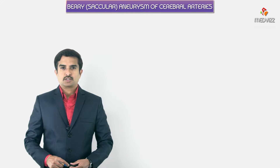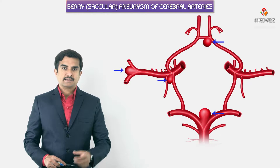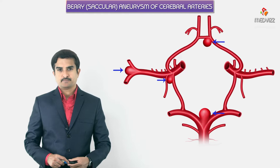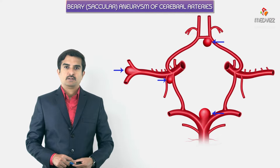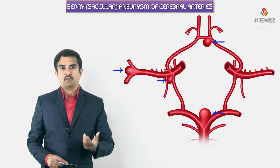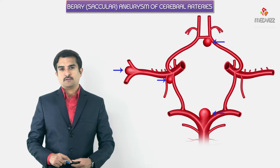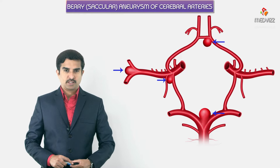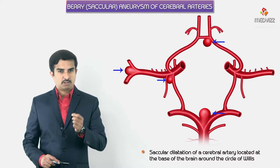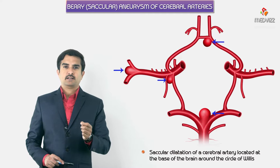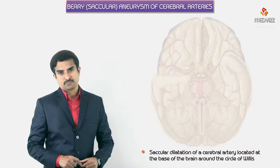Here we are going to discuss about the berry aneurysm. Because of its saccular shape, it is called a saccular berry aneurysm of the cerebral arteries. The definition: it is a saccular dilation of a cerebral artery that is typically located at the base of the brain, around the circle of Willis.